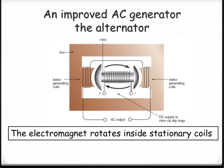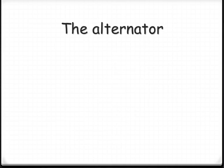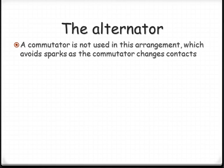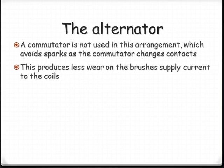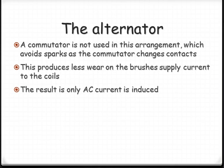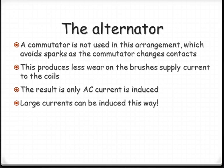A smoother or improved AC generator is the alternator, where the coil is on the outside and an electromagnet on the inside rotates. As it rotates, it induces the current in the outer coil as the AC output. This is better because we're not using a commutator, so there's one less thing to experience wear and tear. Every time it sparks as it changes, it causes wear on the brushes attached to the commutator. Only AC current can be induced this way, but you can induce quite large currents, which is a bonus for generating electricity.